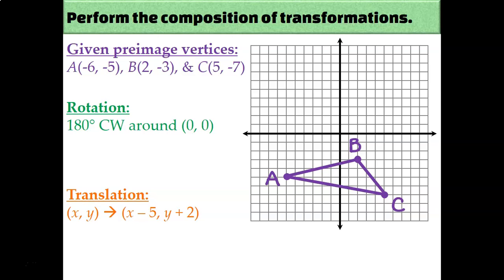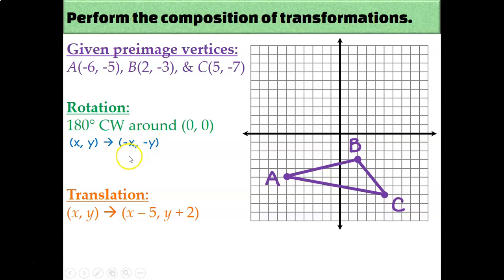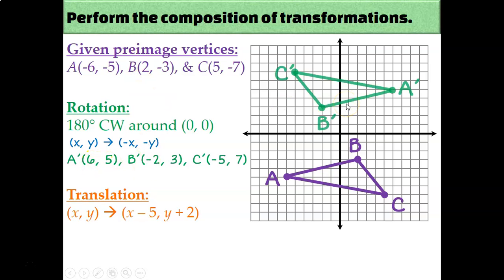Let me show you what I mean. In order to rotate 180 degrees, we use the rule negative x, negative y. So I'm just going to take each of my pre-image coordinates and change their signs. My new coordinates look like this — they're the same thing as before, but with opposite signs. I'll go ahead and plot those points on my graph, and I get this for the image of triangle ABC.